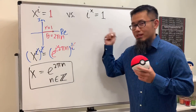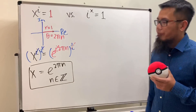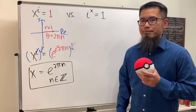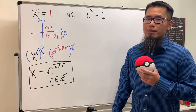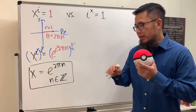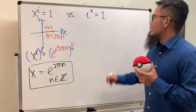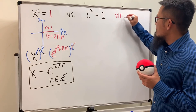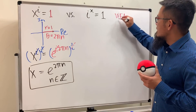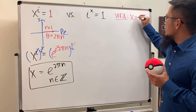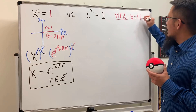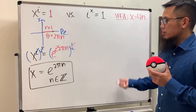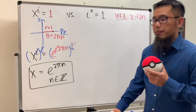Now we're going to look at i to the x power equals 1. If you type this into Wolfram Alpha, it says the answers are x equal to 4n — namely, just multiples of 4.